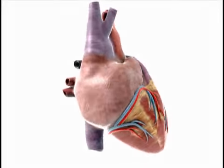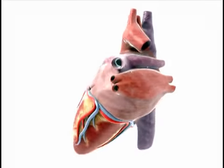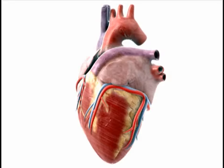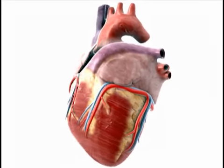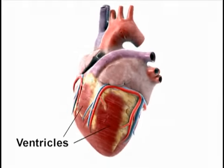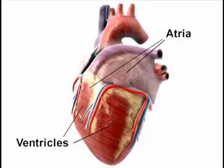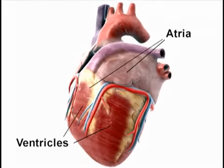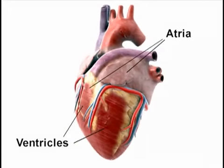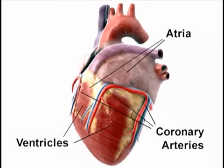Basically, the heart is a pump. Its purpose is to circulate blood to all of the organs of the body. The heart is made up of four chambers — two ventricles that pump blood out of the heart, and two atria which hold the blood returning to the heart. The heart receives its entire supply of blood through three coronary arteries.